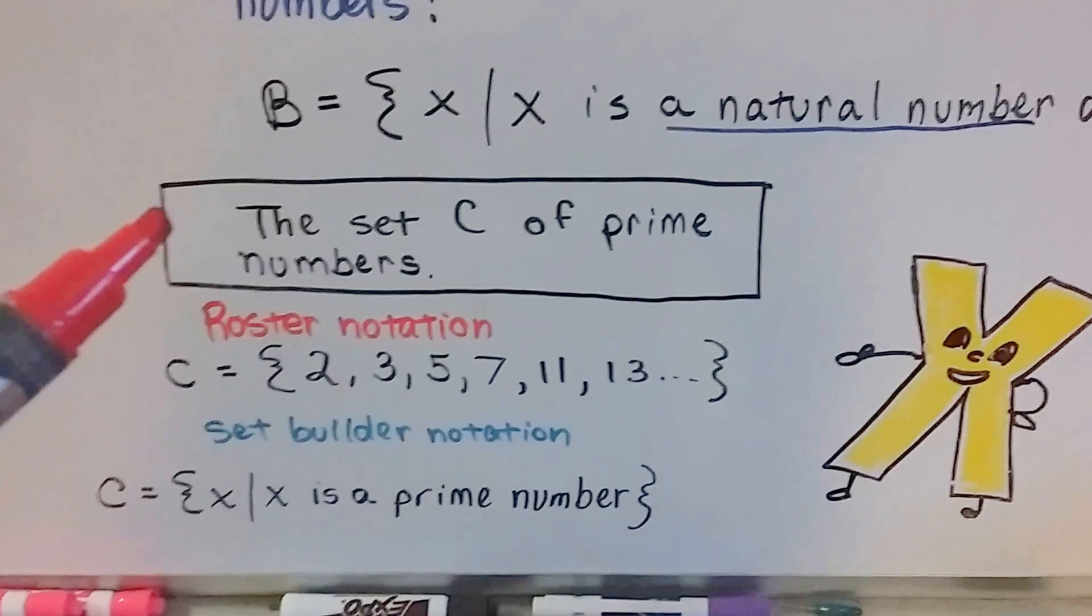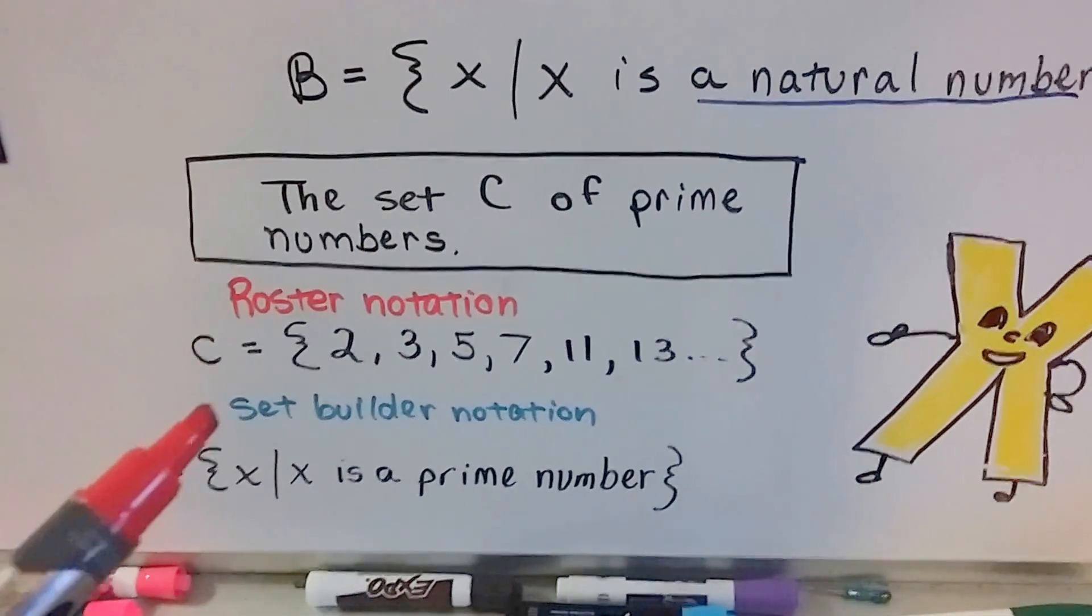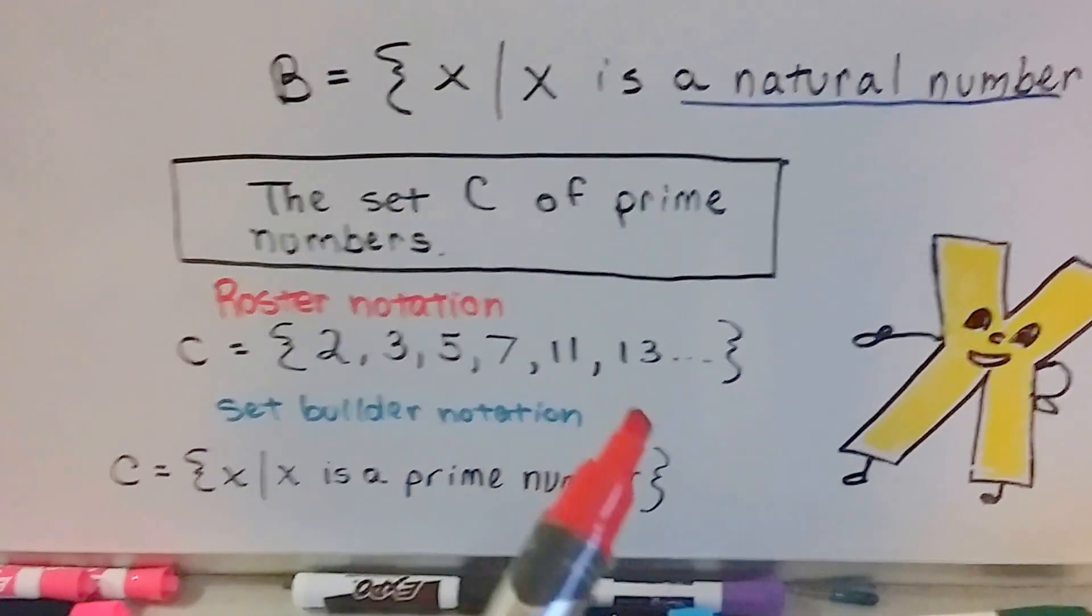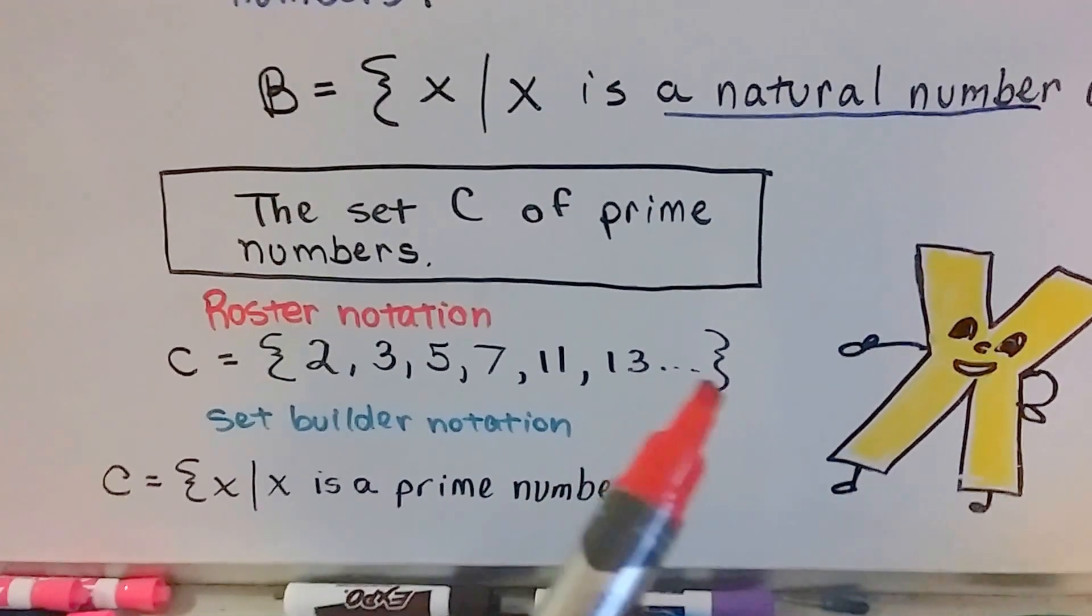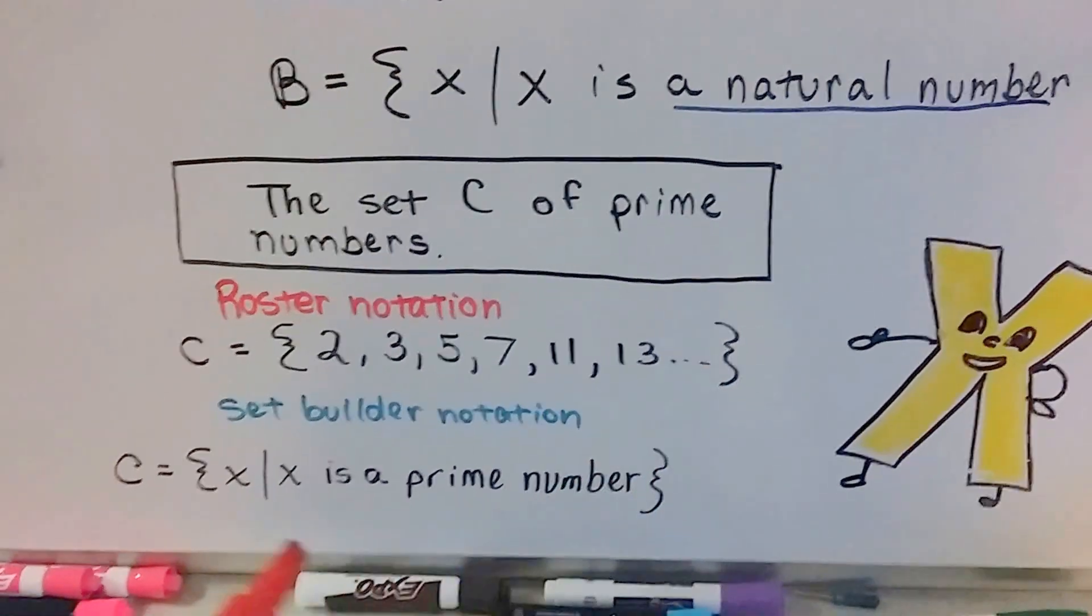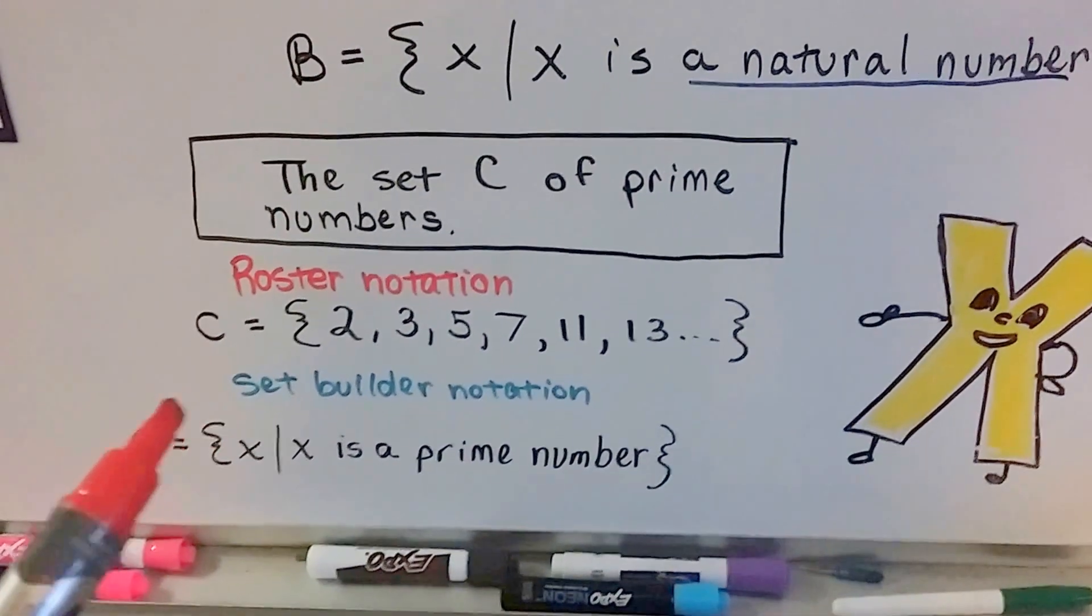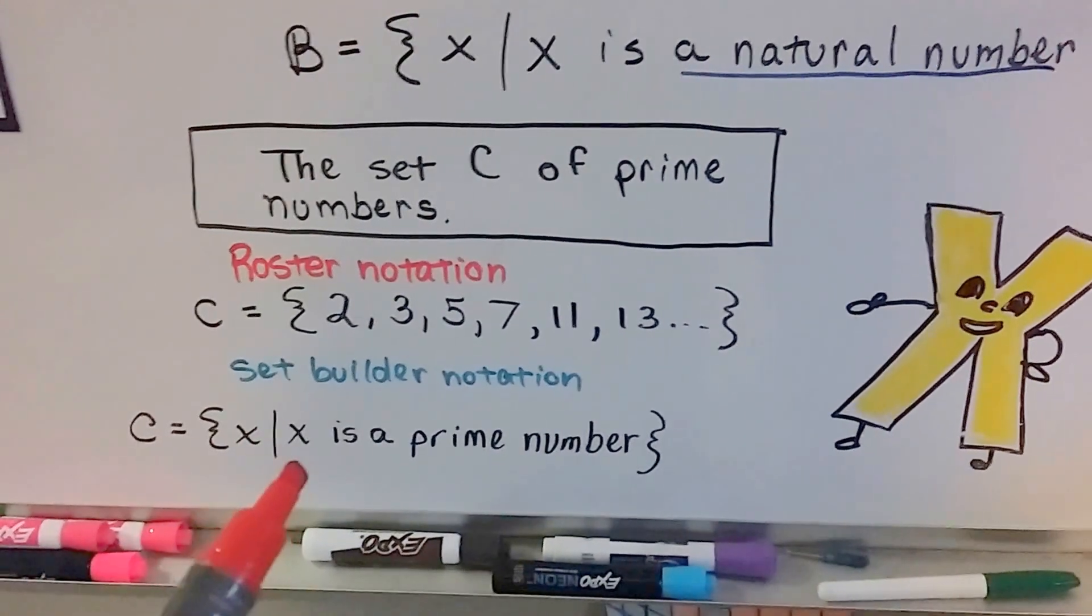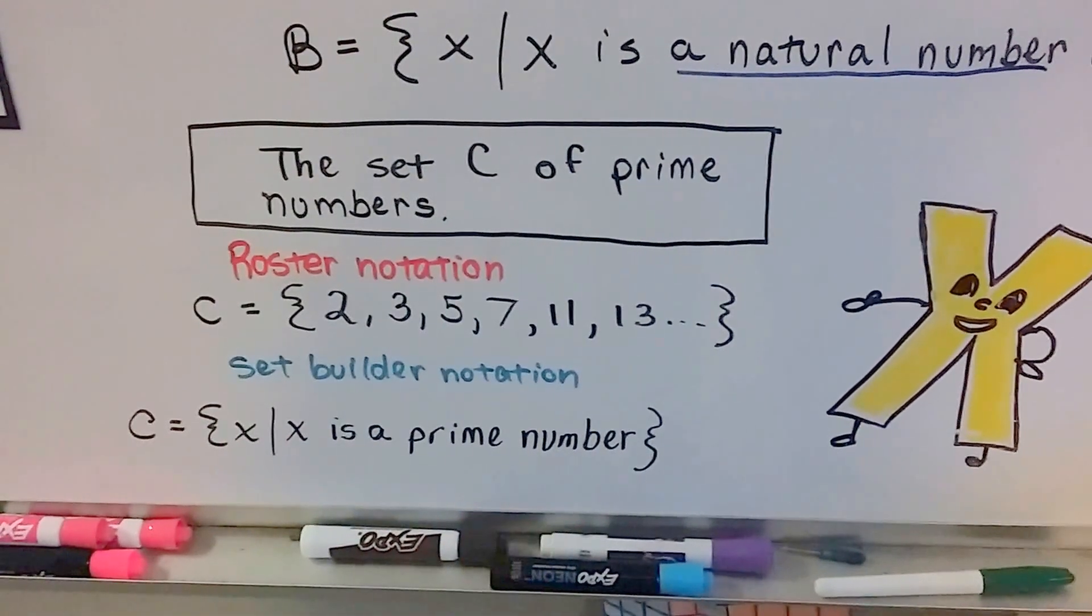If we needed to write the set C of prime numbers in roster notation, we would just list the prime numbers, 2, 3, 5, 7, 11, 13, and our dot, dot, dot, ellipsis to mean and so on. Right? Next one would be what? 17. Right? And then 19. Set builder notation, we would write C equals x, our bar for such that x is a prime number.